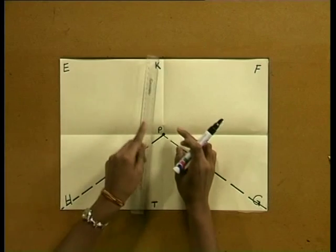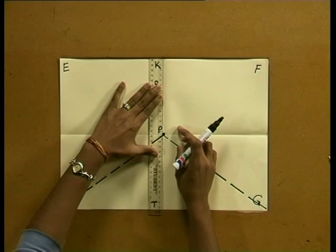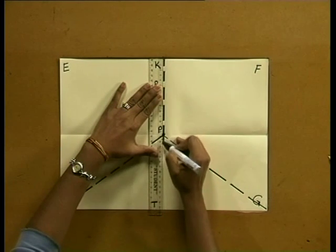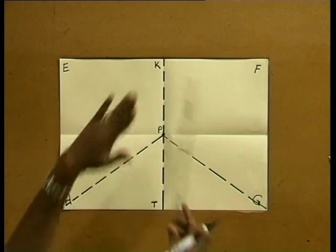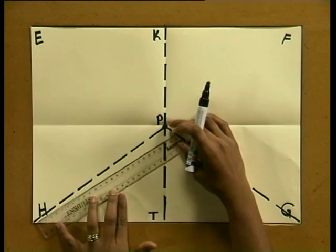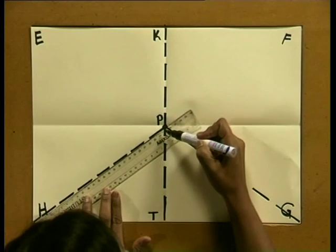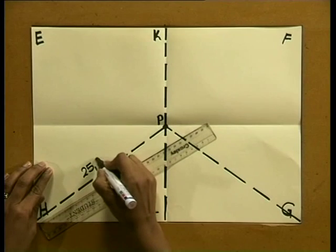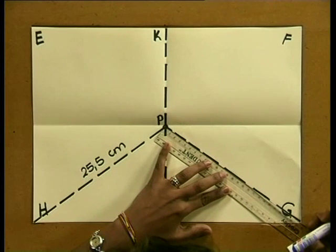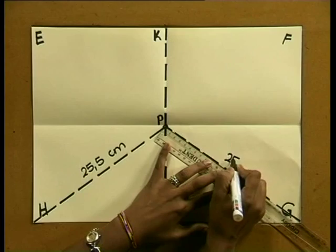And lastly, we join K to T, which is in fact the line of symmetry. For our model to be an isosceles triangle, we need to have two sides that are equal in length. Using our ruler, we will measure sides pH and Pg. We see that pH is 25.5 cm and side Pg also measures 25.5 cm.